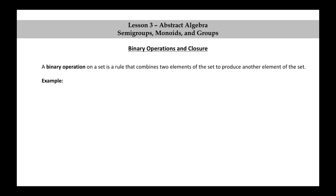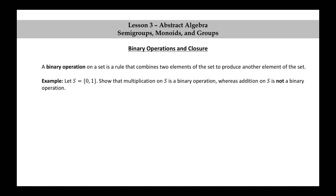Let's look at an example. Let S equal the set consisting of the elements 0 and 1. Show that multiplication on S is a binary operation, whereas addition on S is not a binary operation. Here I'm thinking of multiplication and addition as the usual definitions from elementary school, middle school, etc.